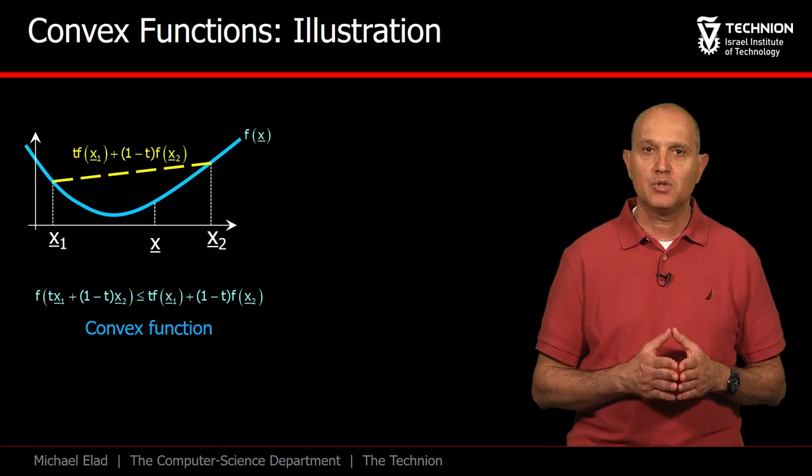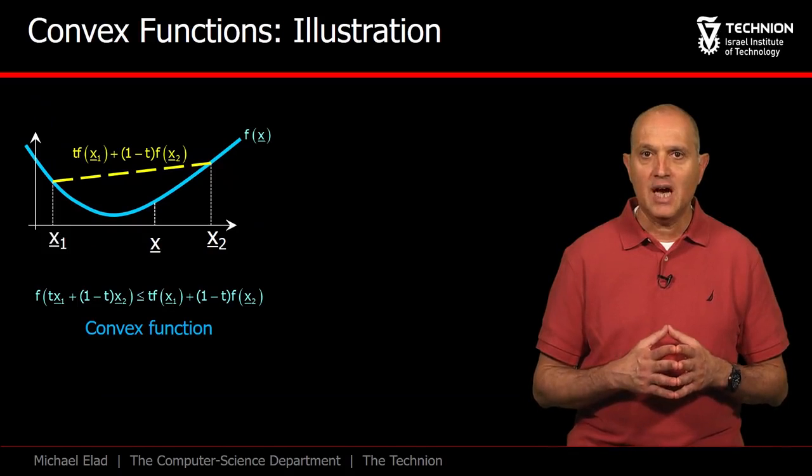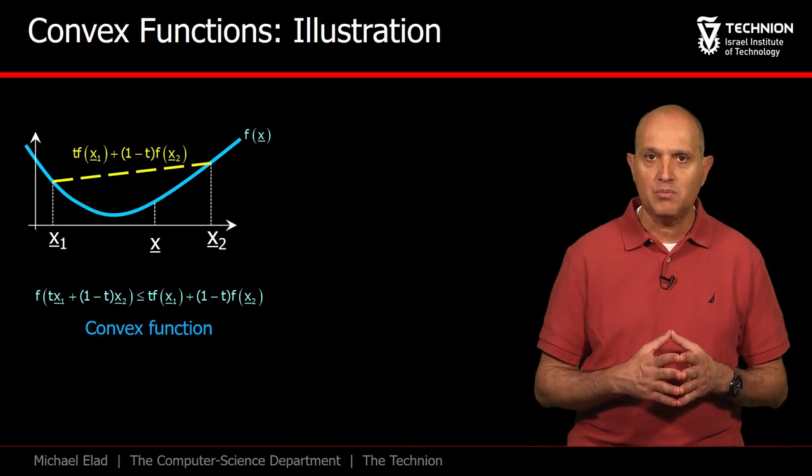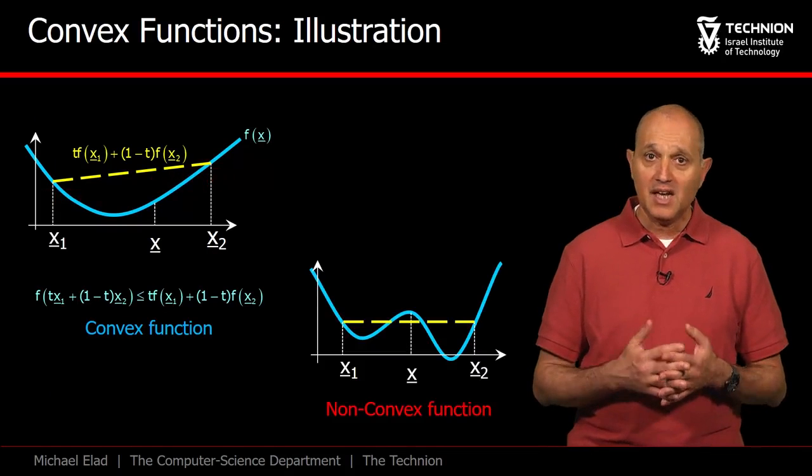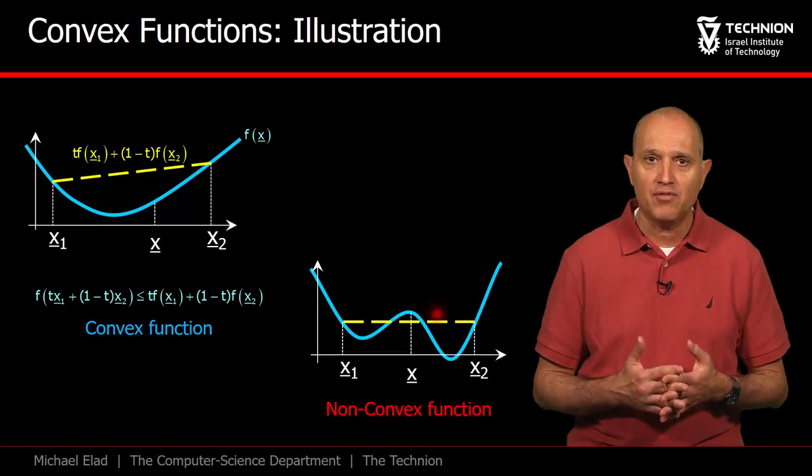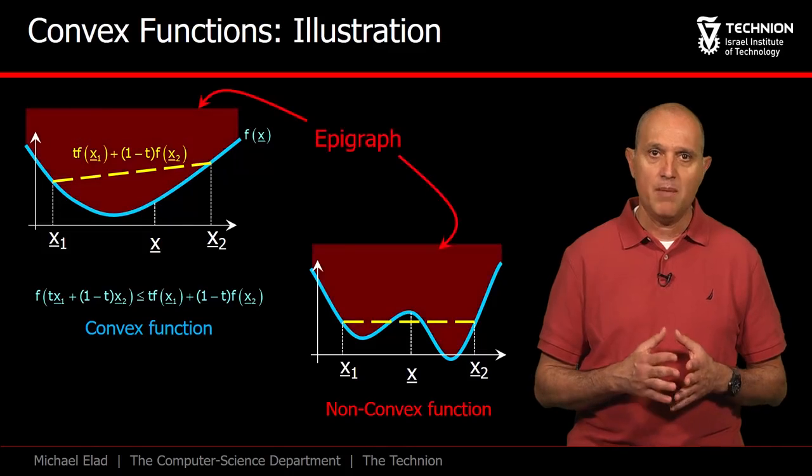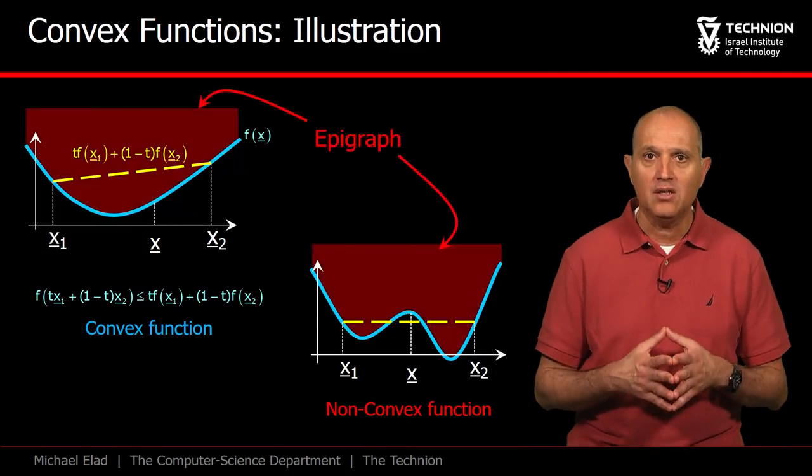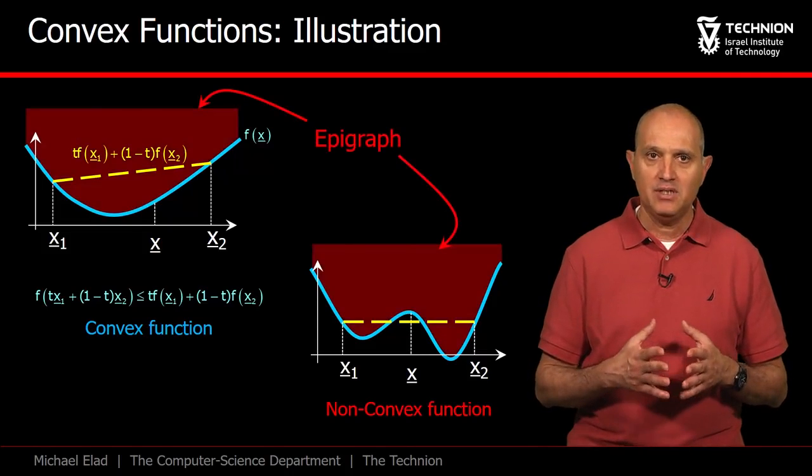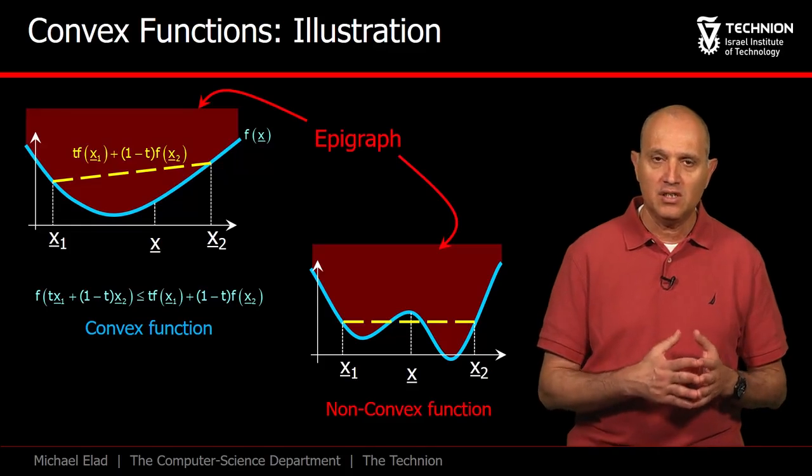This example describes the behavior of a convex function. As can be seen, the function is upper bounded by the line stretched between f of x1 and f of x2. The second example shows a violation of this property, and thus the function is not convex. The epigraph is the set of x and y contained above the function, and as can be seen, the convexity of the function translates into the convexity of a set.